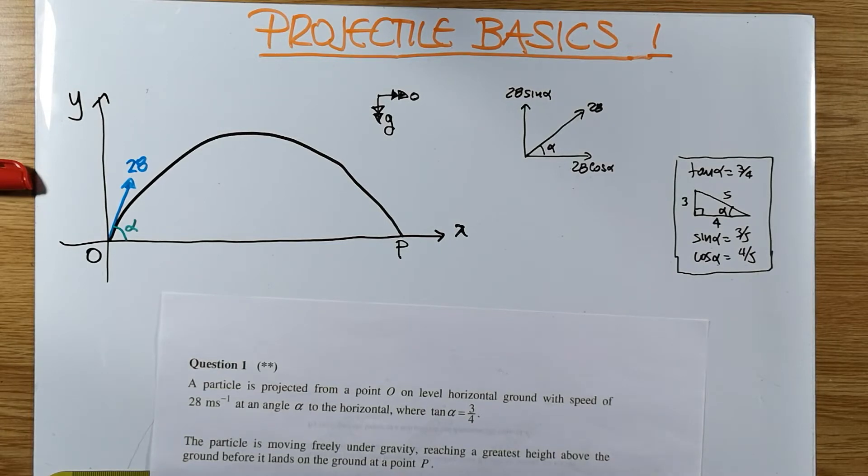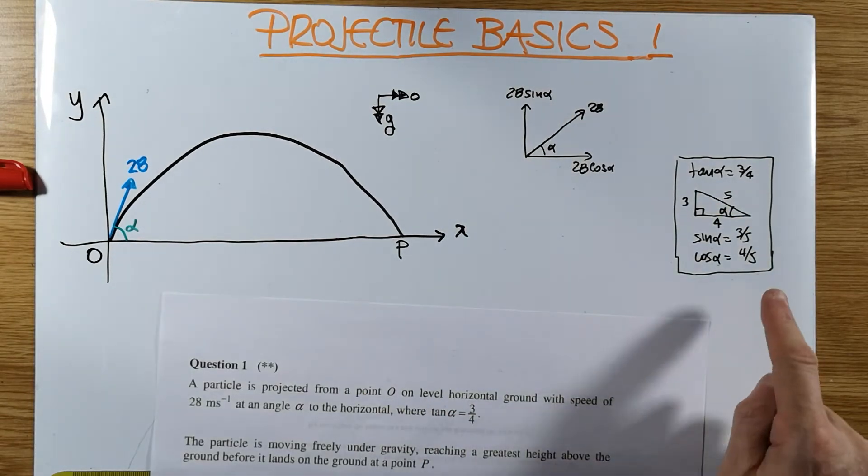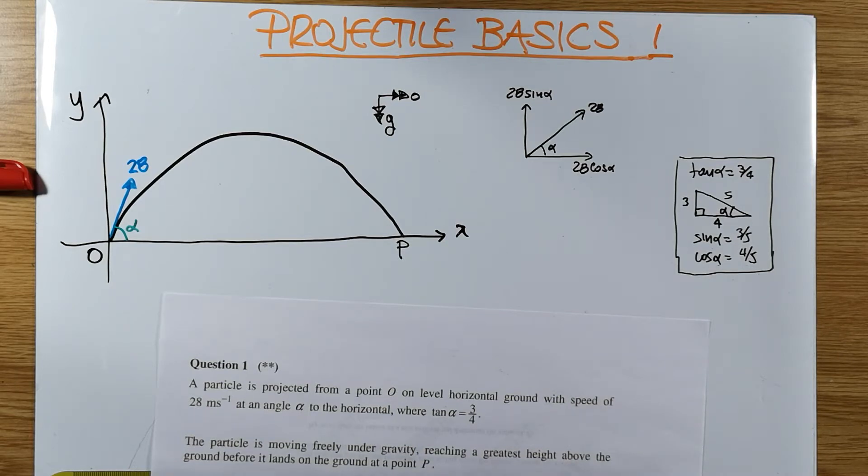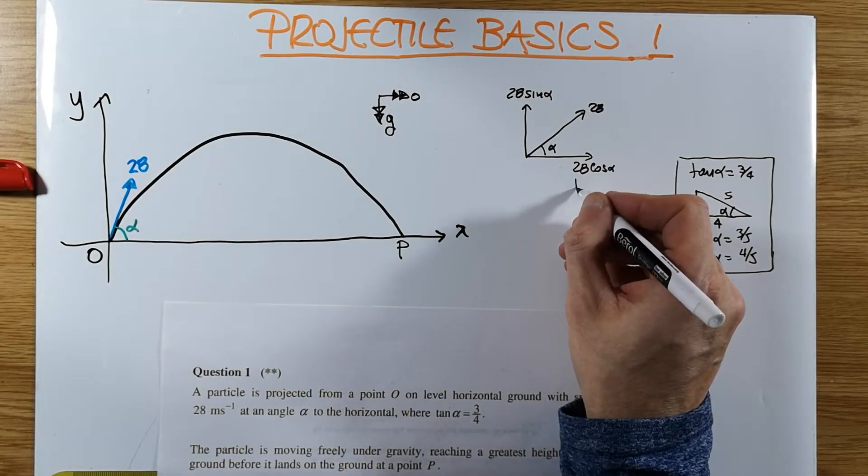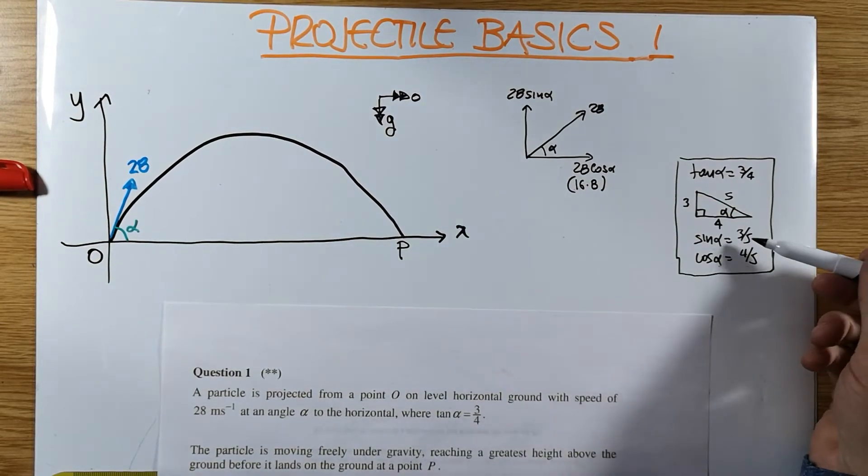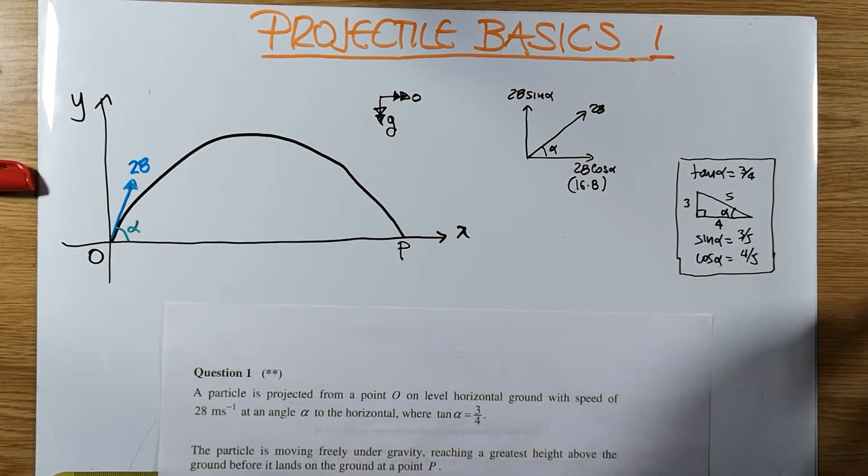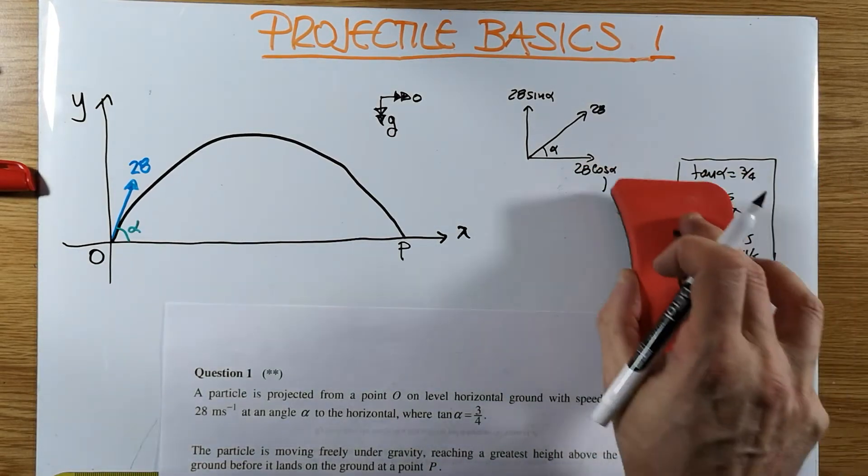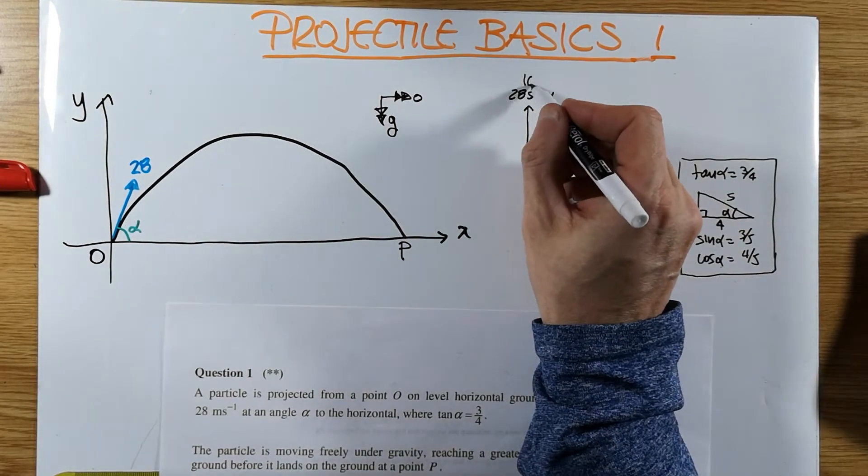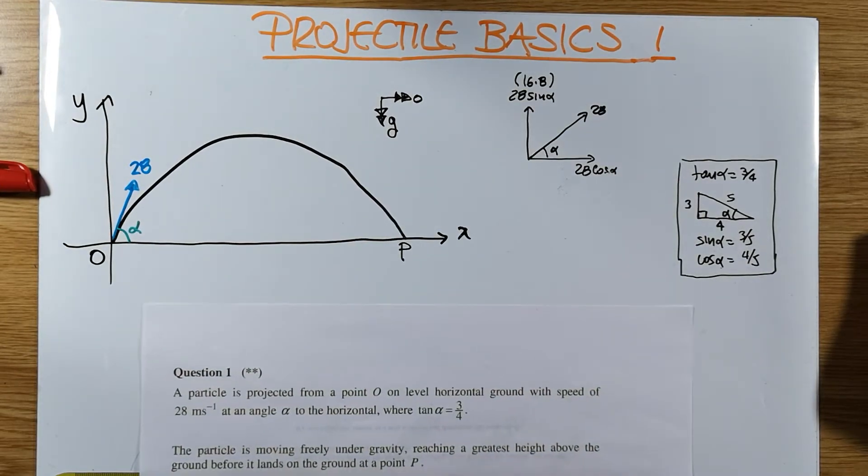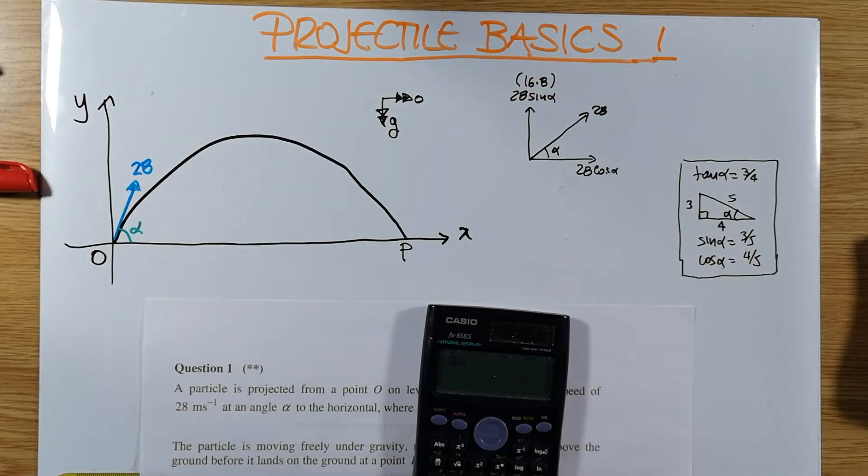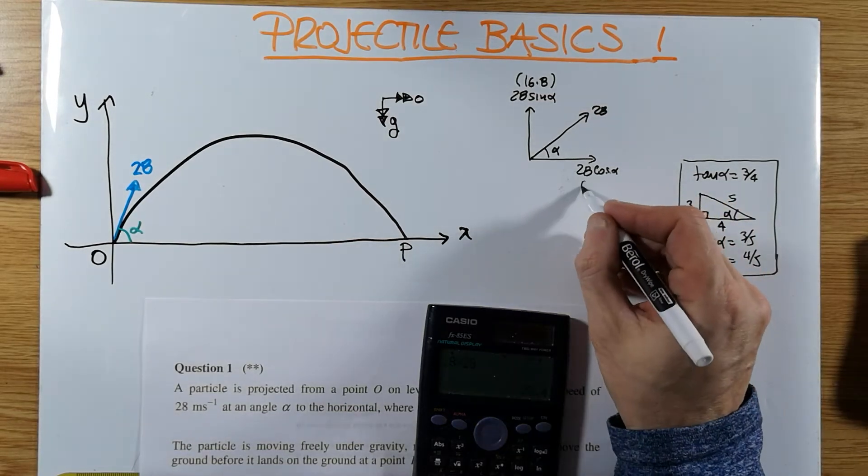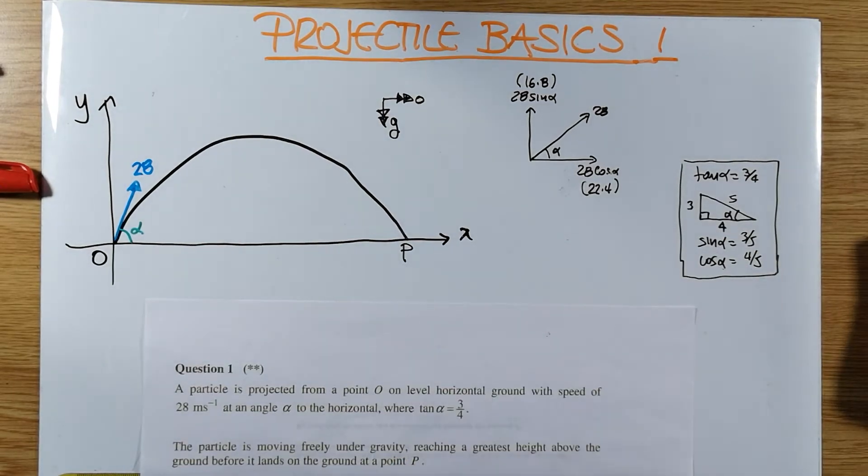What is the significance of these particular quantities? These are the initial velocity components at the moment it's being projected. The cos of alpha is 4 fifths. 28 times 4 fifths is 22.4. And the other one, 4 fifths of 28, is 16.8. So we actually have them handy. Sometimes we might not, sometimes we do.